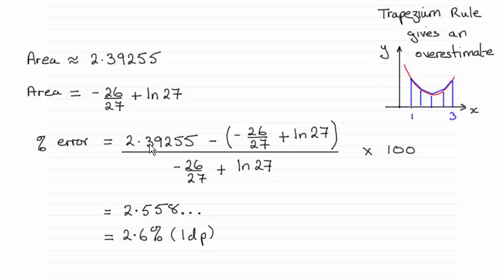And what we do is we just work out the difference between the areas and compare it with the exact area. This fraction then, you just multiply by 100 to convert it to a percentage. And to one decimal place you can see it's 2.6%.